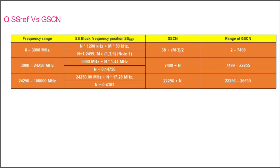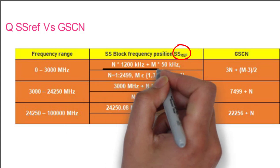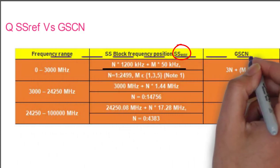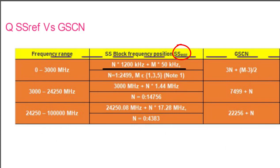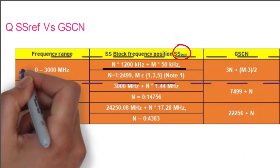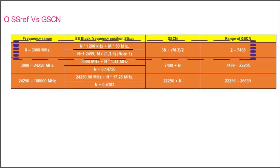If the range of frequency is 0 to 3000 MHz, the SS block frequency position SS_ref is calculated from this formula: N × 1200 kHz + M × 50 kHz. Here 1200 kHz, which is 1.2 MHz, is the synchronization raster step size.